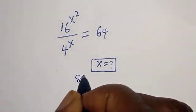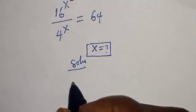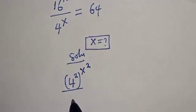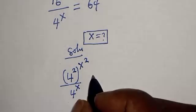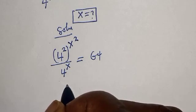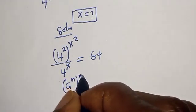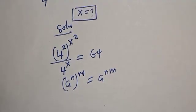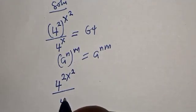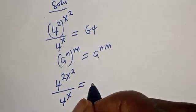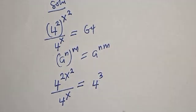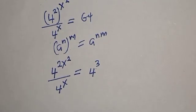16 raised to power s squared can be written as 4 squared to the power of s squared, over 4 raised to power s, is equal to 64. Remember this rule: a to the power of n, to the power of m, equals a raised to power n times m. So this becomes 4 raised to power 2s squared over 4 raised to power s, equal to 64, which is 4 raised to power 3.